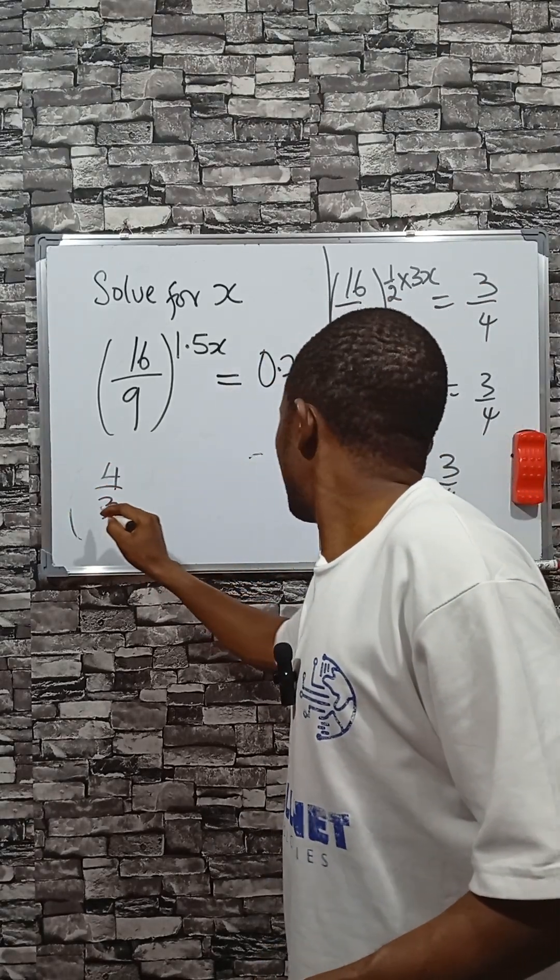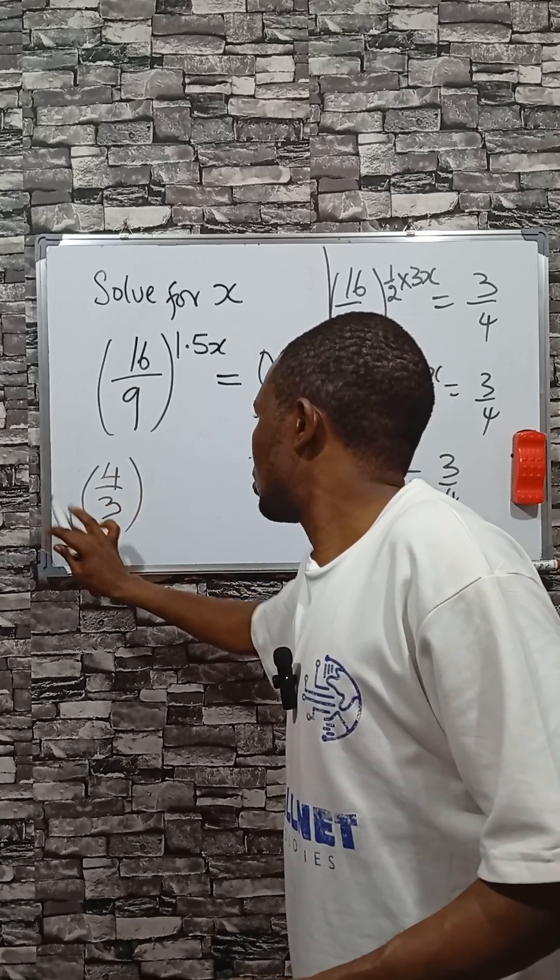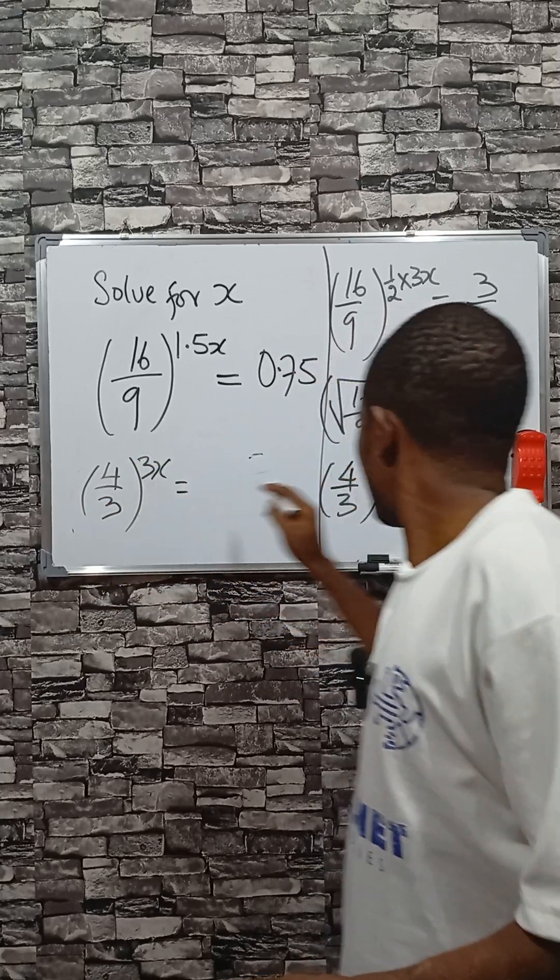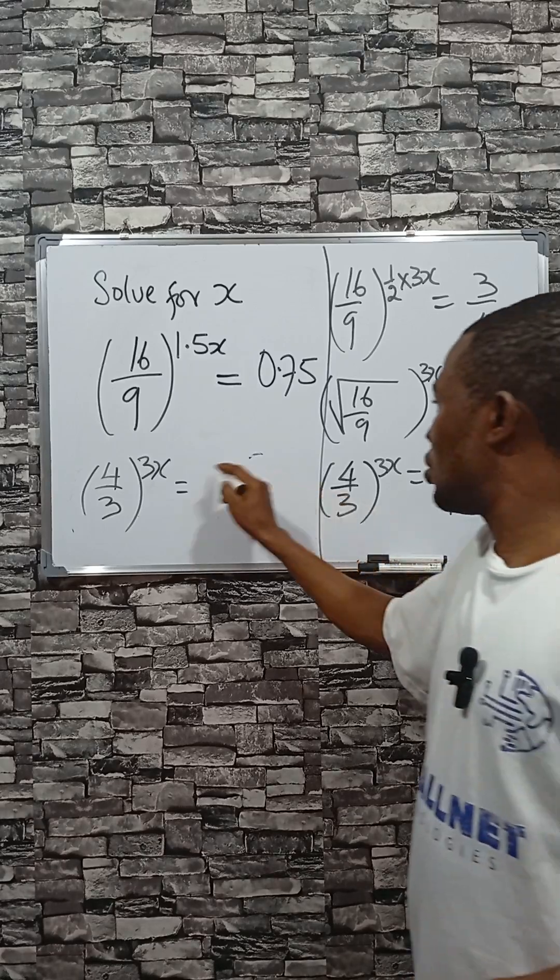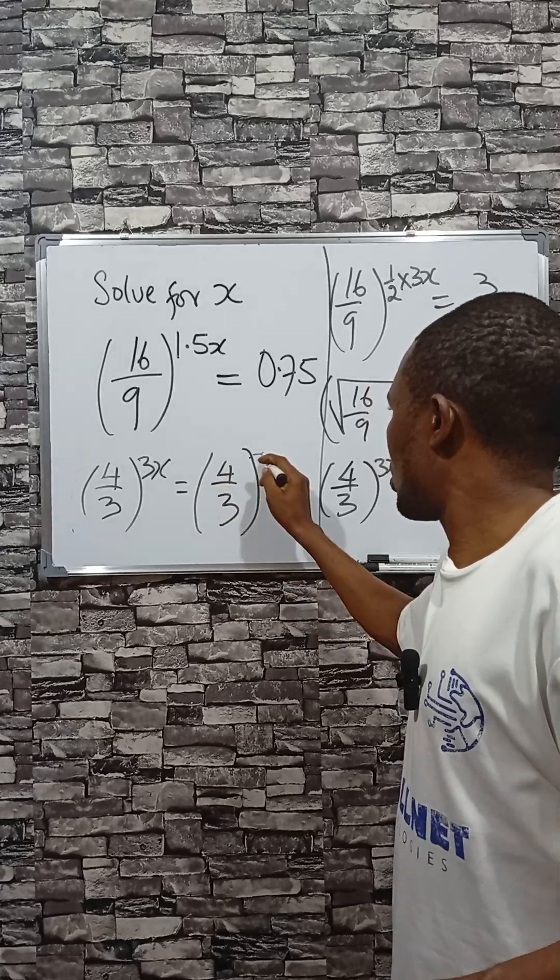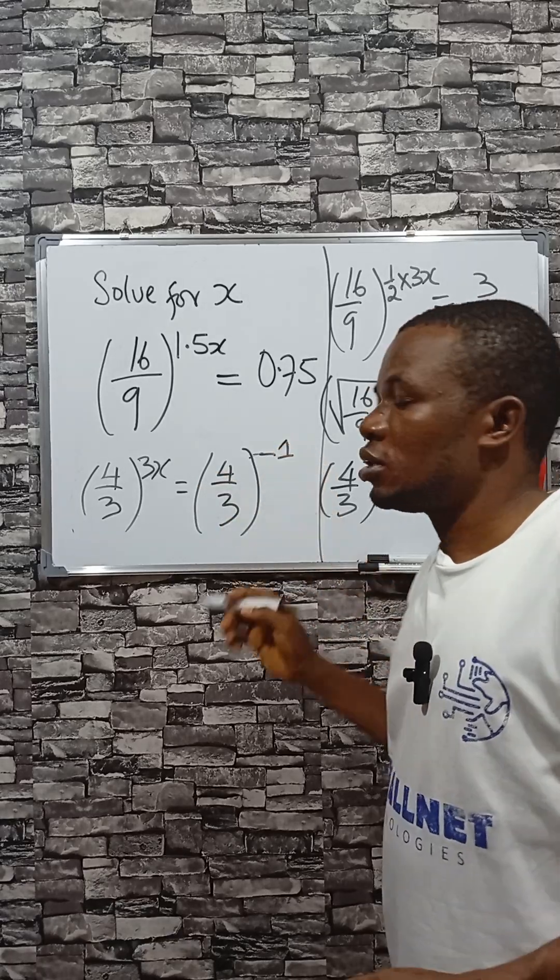4 divided by 3, then raised to the power of 3x. If I take this up so that I have the same base, 4 divided by 3, then raised to power -1, it's the same thing.